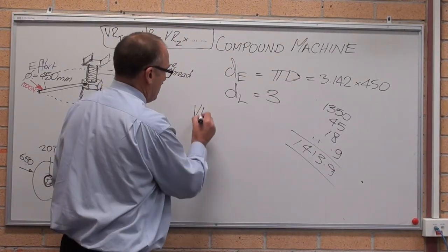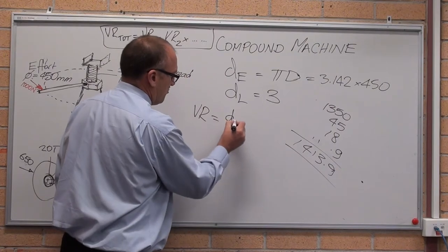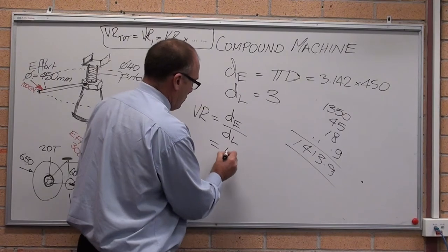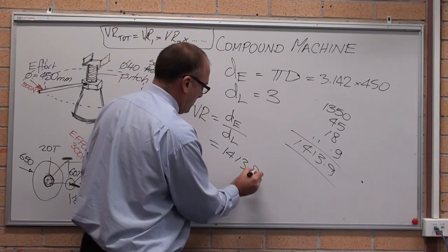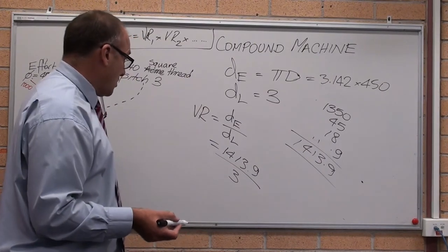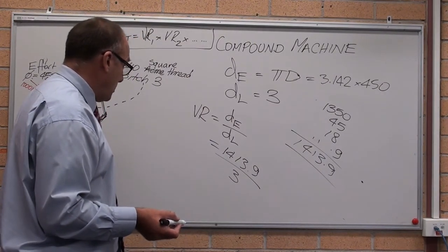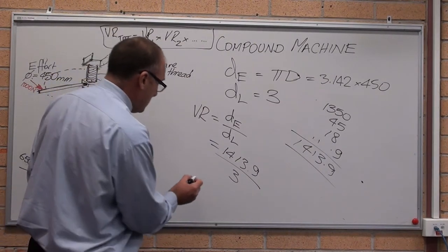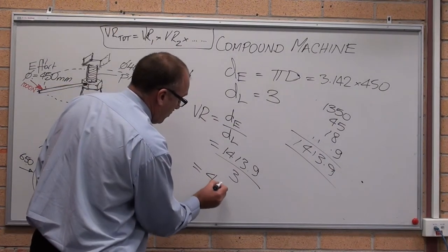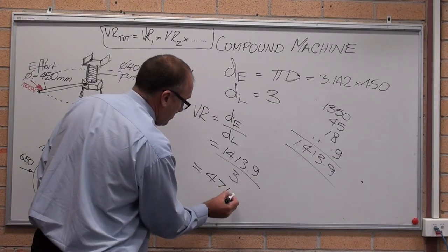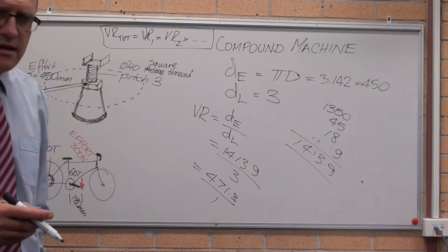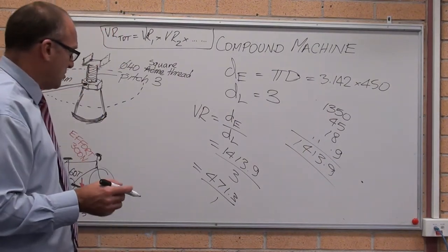The velocity ratio, distance moved by the effort divided by the distance moved by the load equals 1413.9 divided by 3. Is that top line divisible by 3? Yes, it is. Equals 471.3 to 1. 471.3 to 1 is what that works out to be.